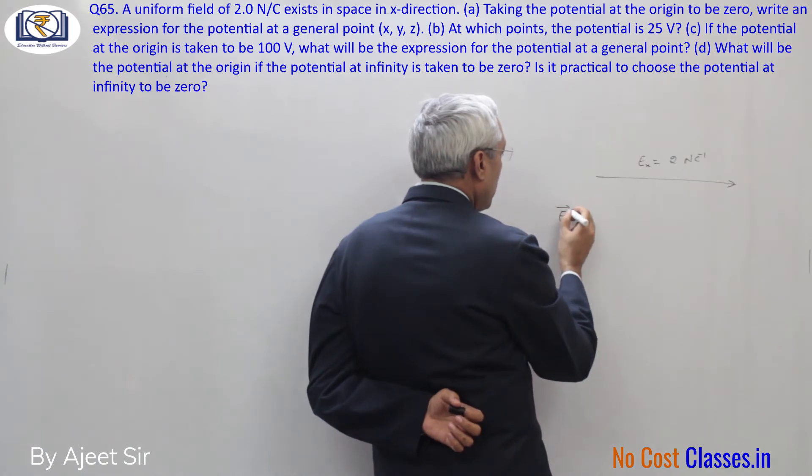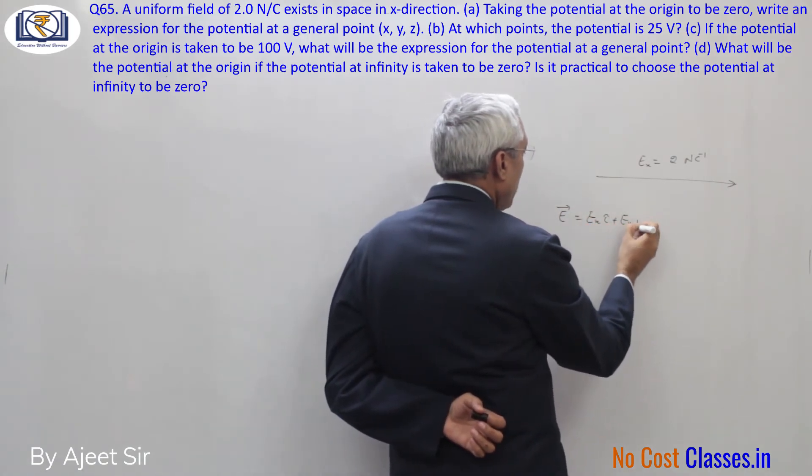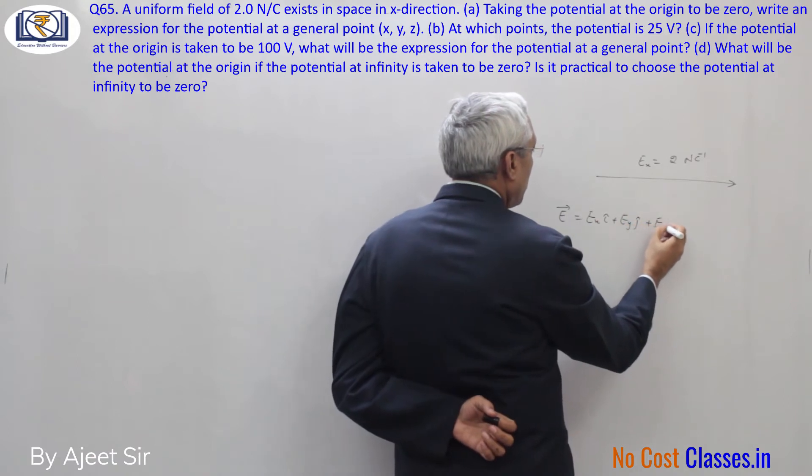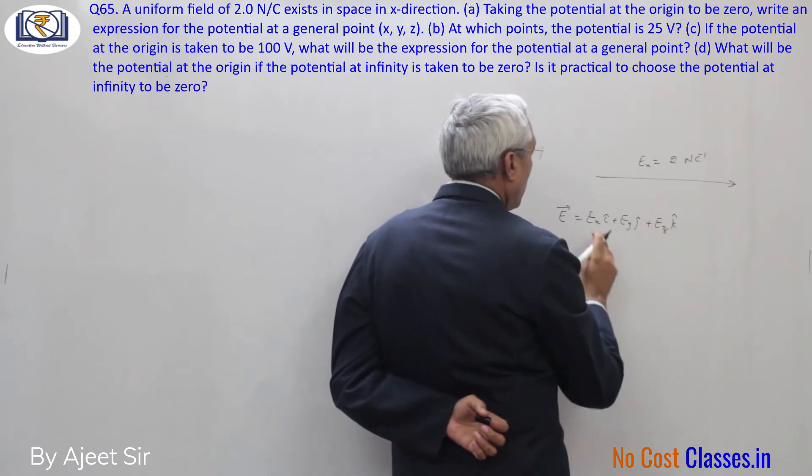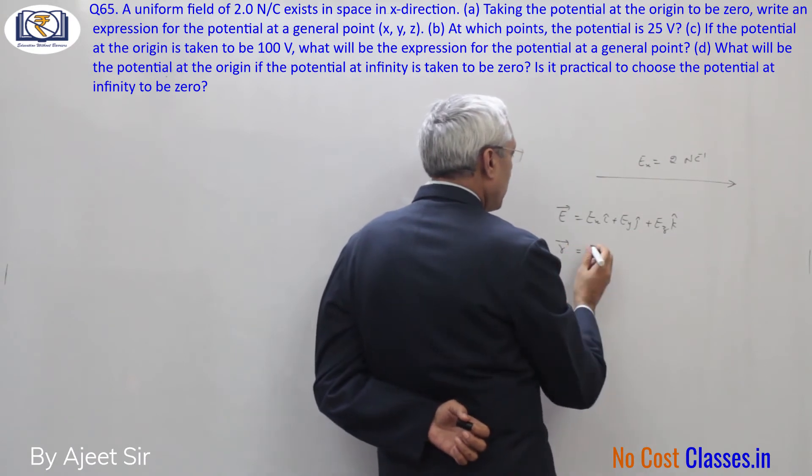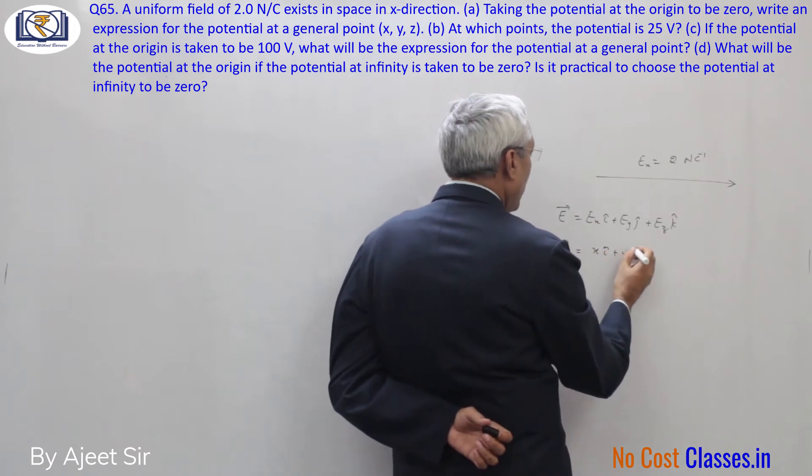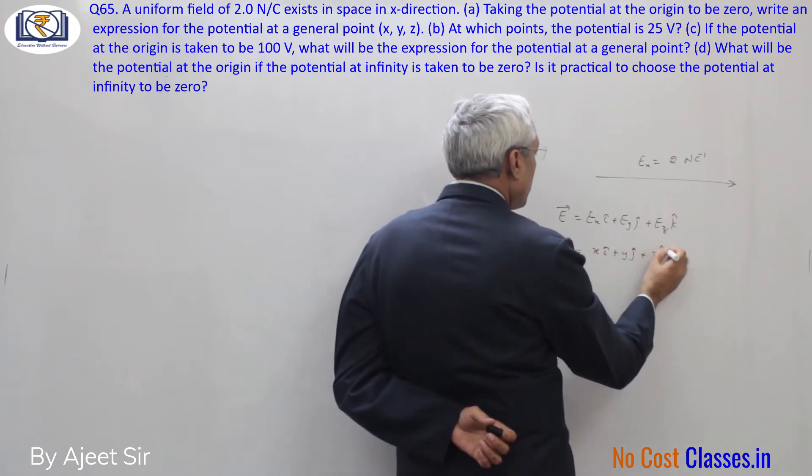We can write E like this: E equal to Ex i plus Ey j. In general expression, E has components in x, y, z directions. For position of any point, the position vector is x i plus y j plus z k.